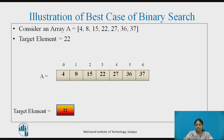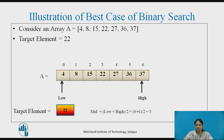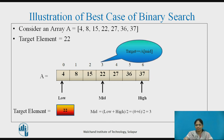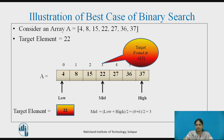Now let us see the illustration when the best case of binary search is achieved. Consider an array of 6 elements, and we want to find the target element 22. Low is initialized to index 0 and high to index 5. The mid value is computed as 3, so mid is placed at the third index. The target element is compared with A[mid], and the target equals A[mid] — the target is found at A[3]. The best case is achieved when the target element is found in only one comparison.